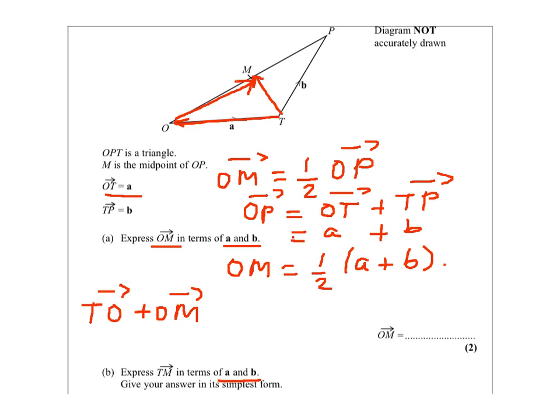TO equals minus a, since OT equals a, it's going in the opposite direction. So it's minus a plus OM. OM, we said, is half of a plus b.